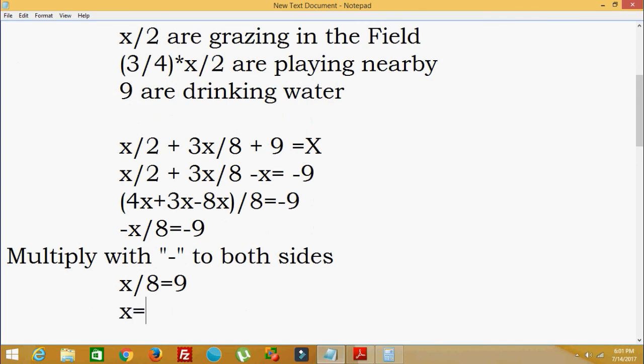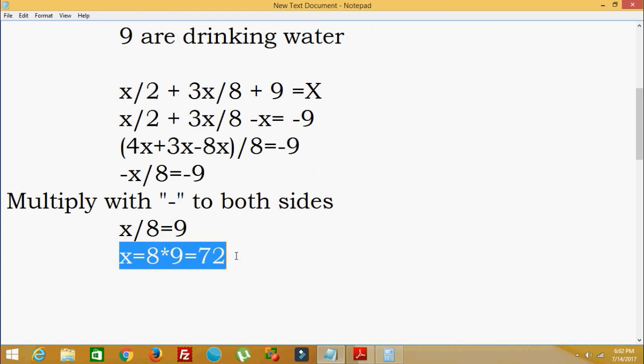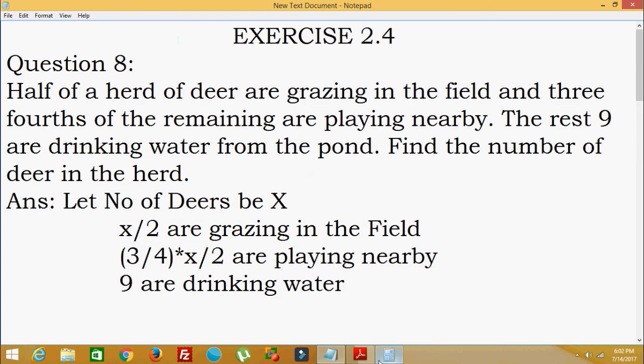Then x = 8 times 9, which equals 72. So the value of x is 72. The value of x is the number of deer. We assumed the number of deer is x, so the total number of deer is 72. Thank you and subscribe for more videos.